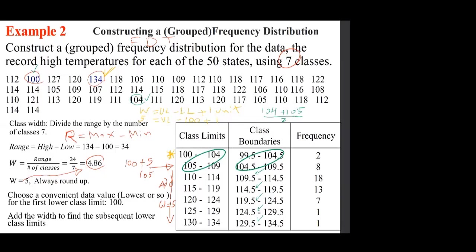Let's clarify the difference between limits and boundaries. With class limits, the first class is 100 to 104, and both endpoints are included. With boundaries, the first class goes from 99.5 up to — but not including — 104.5. So 104.5, if it were in the data, belongs to the next class.